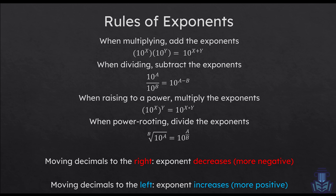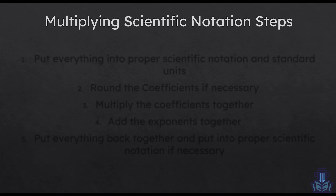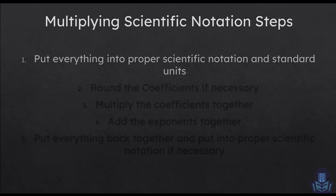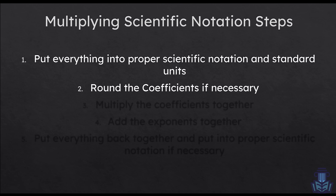Now for actually multiplying different bits of scientific notation together, there are some basic steps. The first thing I recommend is that if the numbers you're doing math with are not simple, put everything into proper scientific notation and standard units — so if there's a prefix like nano or micro, get rid of that. The second step: feel free to make small rounds to the coefficients. For example, if it's 6.7, it's totally fine to round that up to 7, but I would not recommend rounding 6 up to 10.